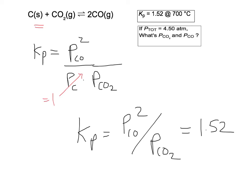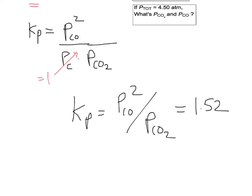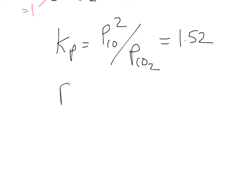We're also told in the problem that the total pressure is 4.5 atmospheres. So we can write the total pressure is 4.5 atmospheres, and we need to find out the partial pressure of CO and the partial pressure of carbon dioxide.